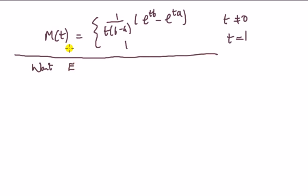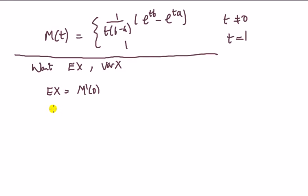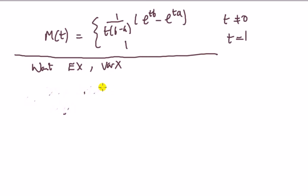Next, we want to compute using the MGF the expected value of X and the variance of X. We know the expected value of X is the first moment — the first derivative of the MGF evaluated at t equals 0. So we want the first derivative of the MGF. Let me rewrite it equivalently without fractions, using t^(-1) instead of having t in the denominator.